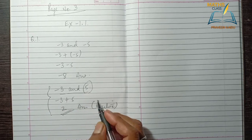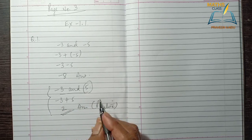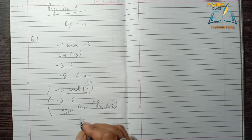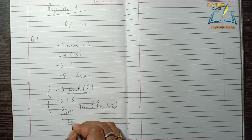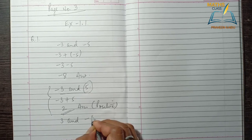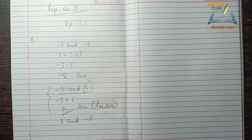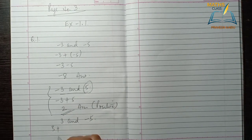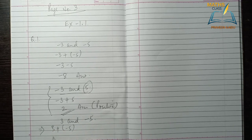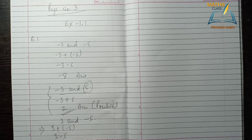To find a negative sum, we can change the values: take 3 and minus 5. When we add 3 and minus 5, the result is minus 2.